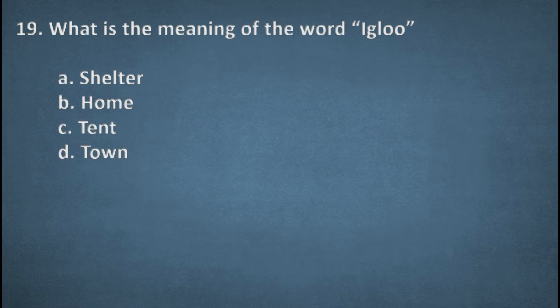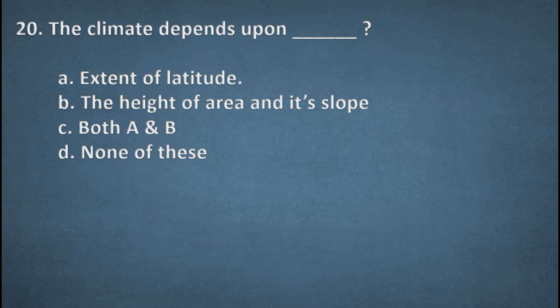Next one. What is the meaning of word igloo? Options: Shelter, Home, Tent, Town. The right option, A, Shelter. Next one. The climate depends upon. Options: Extent of latitude, The height of area and its slope, Both A and B, None of these. The right option, Both A and B. Extent of latitude and the height of area and its slope.